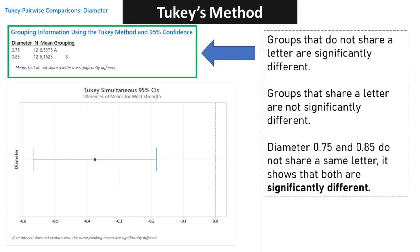In the grouping information using the Tukey method and 95% Confidence, groups that do not share a letter are significantly different. Groups that share a letter are not significantly different. Diameter 0.75 and 0.85 do not share the same letter, showing that both are significantly different.